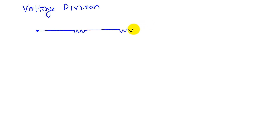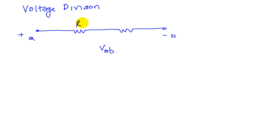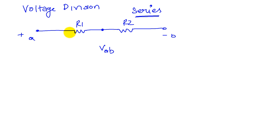The idea of voltage division is that when I have an element — here's a resistance, a second resistance — and we have two points A and B. This is positive-negative, so we have a voltage VAB applied across these two resistors. Let's say these are resistance R1 and R2, connected in series. The idea of connecting elements in series is that they share a common point, so this element and this element have a common point — they are in series. A series connection of elements creates what we call a voltage divider.